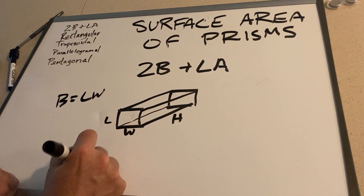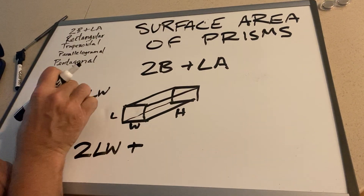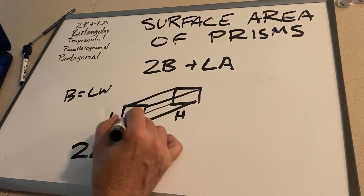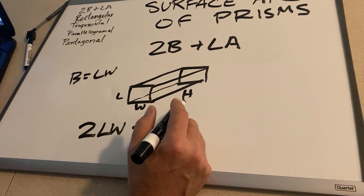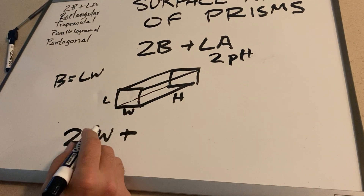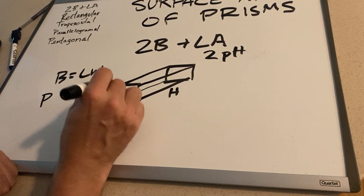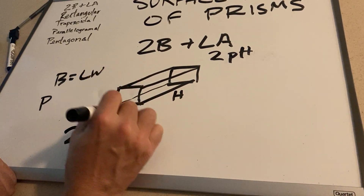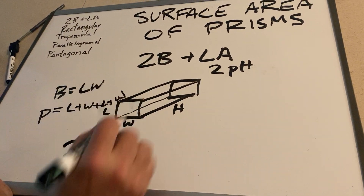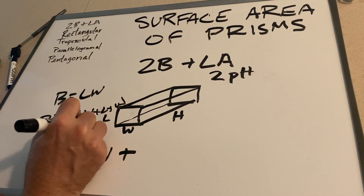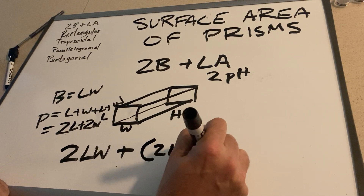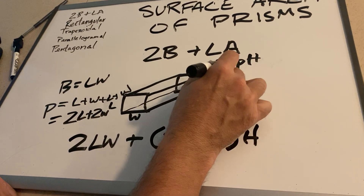So 2 times length times width is 2B. If I plug in LW for B, I get 2 times LW for 2B. Now then, the lateral area — we want the perimeter times the height. What is the perimeter of this rectangle? That would be L plus W plus L plus W, since these two are equal and these two are equal. So it would be 2L plus 2W. That's our perimeter. So 2L plus 2W, then multiply that by the height — perimeter times height.